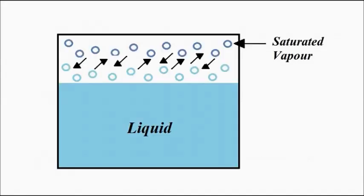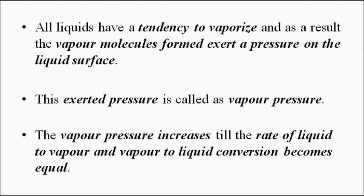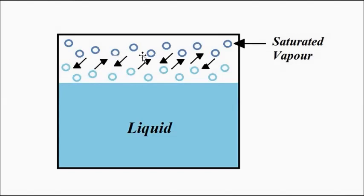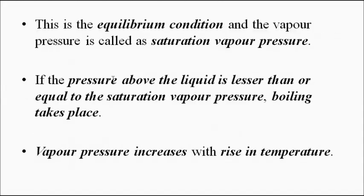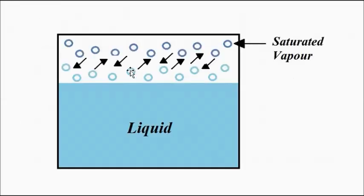This vapor pressure continues to increase until the rate of conversion of liquid to vapor and vapor to liquid becomes equal. The rate at which liquid molecules are converted into vapor molecules and vapor molecules are reconverted back to liquid — when these two rates become equal, the pressure at which that equilibrium condition is attained is called the saturation vapor pressure.